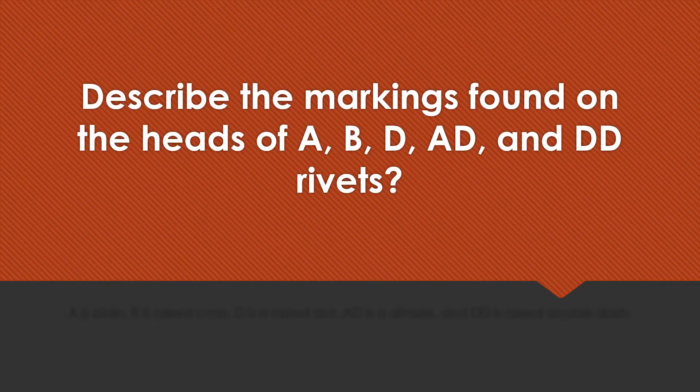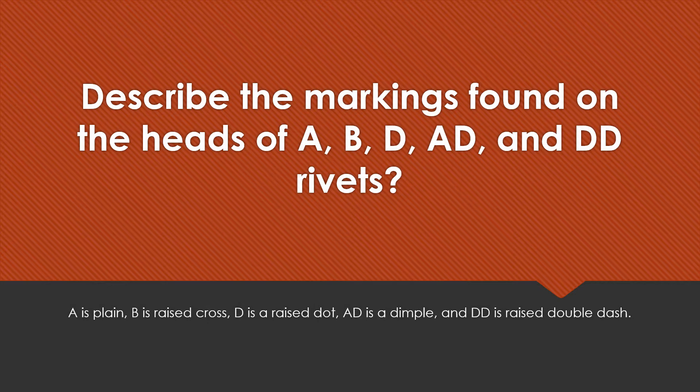Describe the markings found on the heads of A, B, D, AD, and DD rivets. A is a plain head, B is a raised cross, D is a raised dot, AD is a dimple, and DD has a raised double dash.